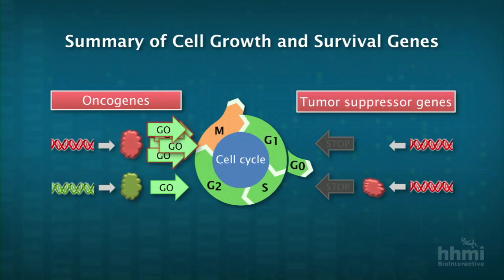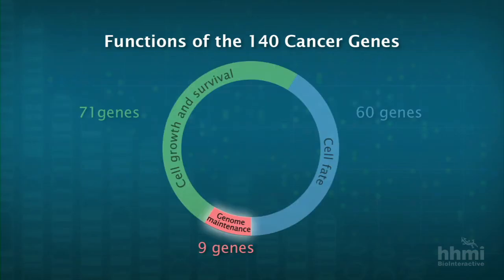In that class of genes, just like we talked about yesterday, you only need one mutation — those are dominant. So what about the genome maintenance category? There are nine genes that we've put into that category.